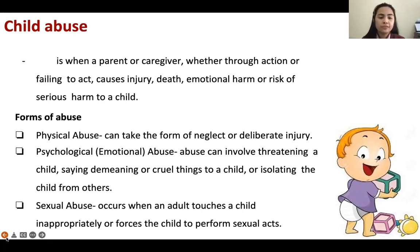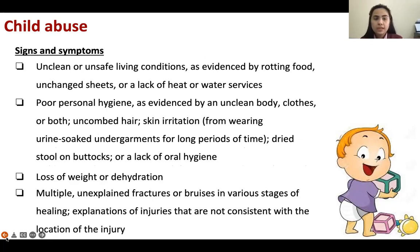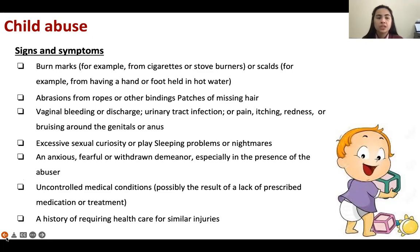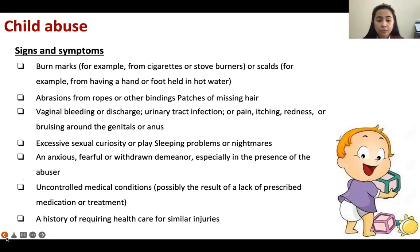There are different forms of abuse: psychological, physical, and sexual. Signs and symptoms of abuse include: unclean or unsafe living conditions, poor personal hygiene as evidenced by unclean body and clothes, skin irritation, loss of weight or dehydration, multiple unexplained fractures or bruises in various stages of healing, burn marks or scalds, abrasions from ropes or other bindings, vaginal bleeding or discharge indicating possible rape, excessive sexual curiosity, an anxious or fearful or withdrawn demeanor, uncontrolled medical conditions, and a history of requiring health care for similar injuries.